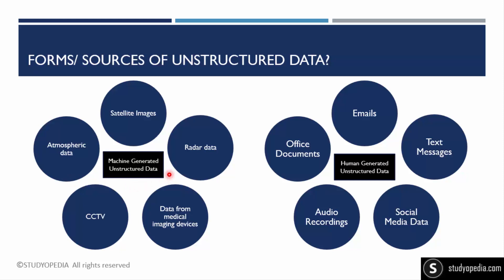Radar data enables live tracking of weather and flights, and is also an unstructured data form. Now, for human-generated unstructured data: email messages can include text, videos, and images, so they cannot be structured properly. Text messages nowadays also include GIFs, images, and other content — on WhatsApp you can share images and videos — which also falls under unstructured data.